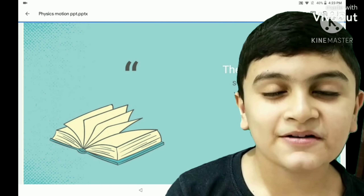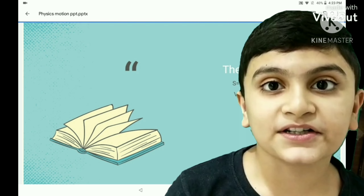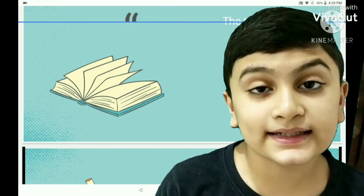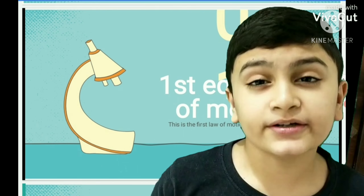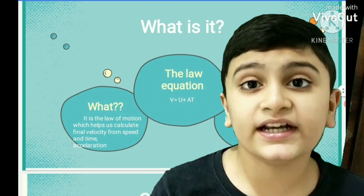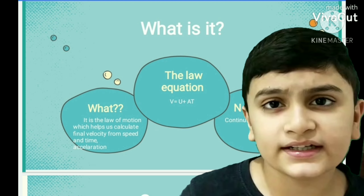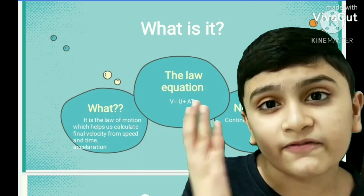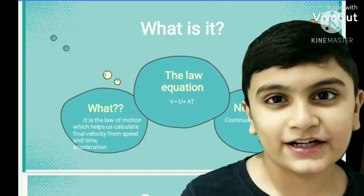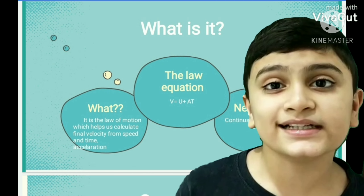It is time for the first equation of motion. The first equation of motion is an equation which tells you about the final velocity from initial velocity, acceleration, and time. The equation is so simple: V is equal to U plus AT. That is, final velocity is equal to the initial velocity plus acceleration into time.